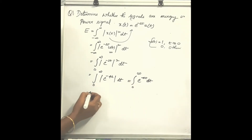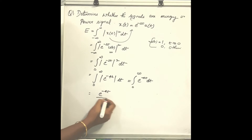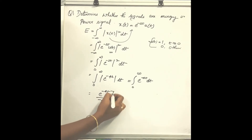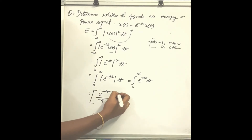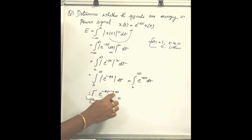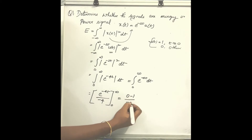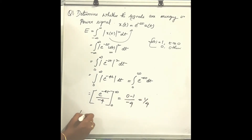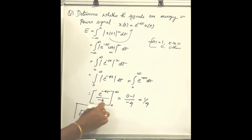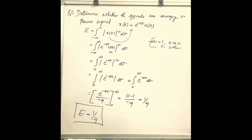Integrating e^(-4t) gives e^(-4t) divided by minus 4, with limits from 0 to infinity. Applying the limits gives 0 minus 1 divided by minus 4, which is nothing but 1 by 4. So the energy is 1/4.